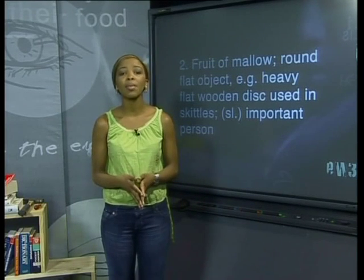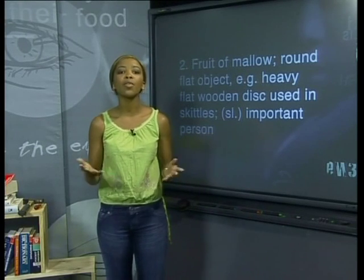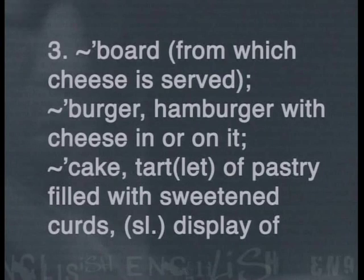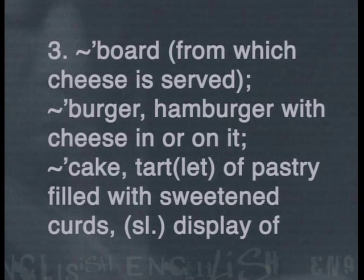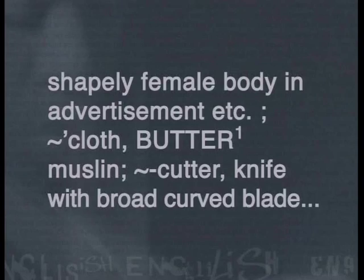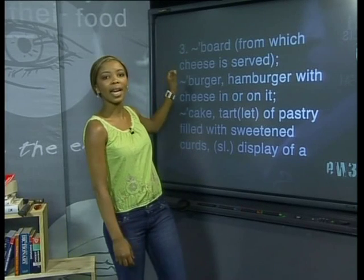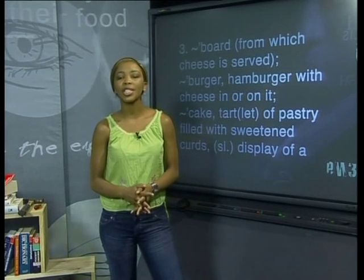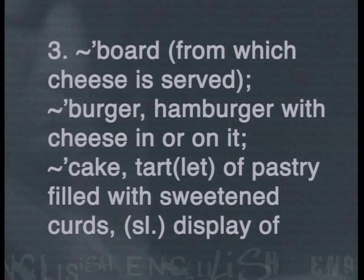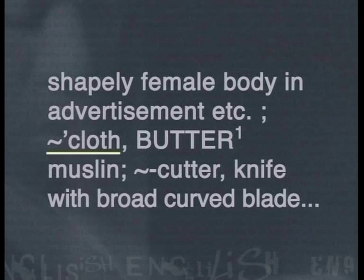We don't have time to go through all the meanings of cheese, so let's move on to the next section. The little curvy lines used before each word tell us that the word cheese is missing in each case. This part of the definition tells us what a cheeseboard — the board from which cheese is served — a cheeseburger, a cheesecake, cheesecloth, and a cheesecutter are.